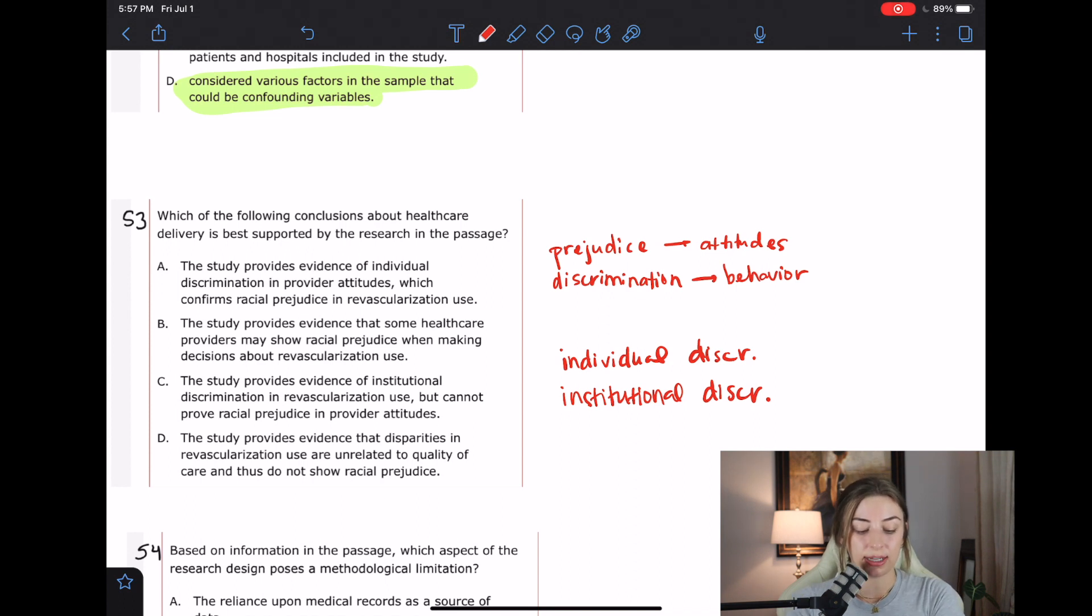C, the study provides evidence of institutional discrimination and revascularization use, but cannot provide or cannot prove racial prejudice and provider attitudes. That's kind of what I was saying. Like, it's kind of hard to decide whether or not these people are actually prejudiced or if there is just like an institutional discrimination for one reason or another. Maybe you can argue that in order to have discrimination that you have to have prejudice, but I don't know. That's kind of crossing a line. And so I feel like C is our best answer here so far.